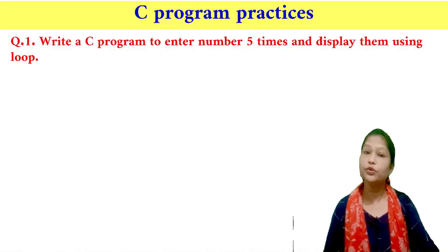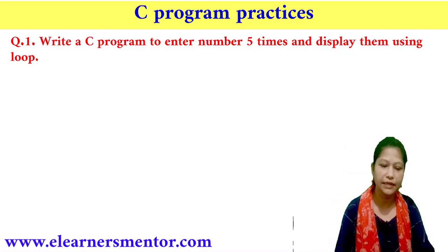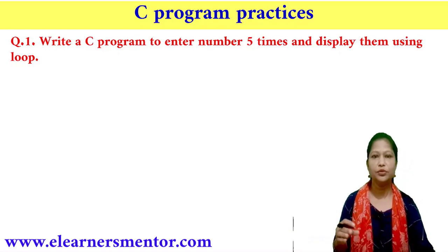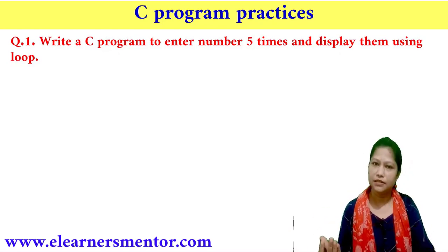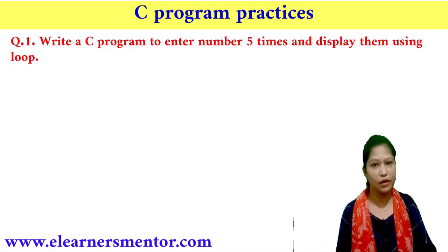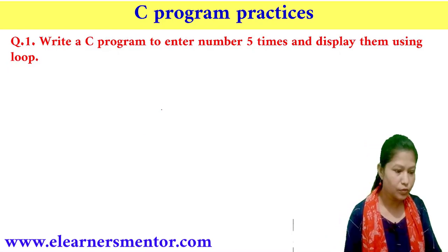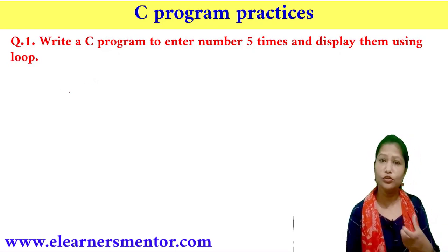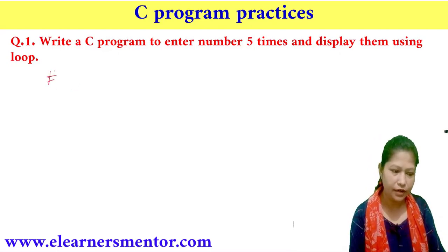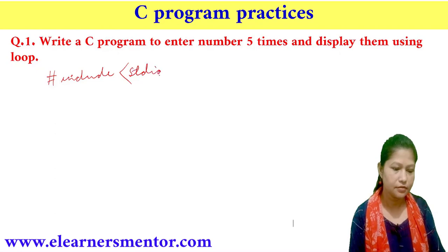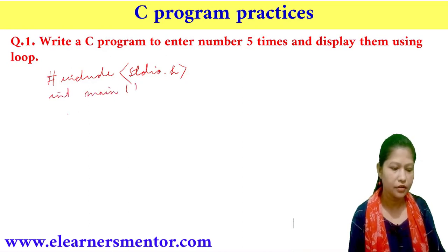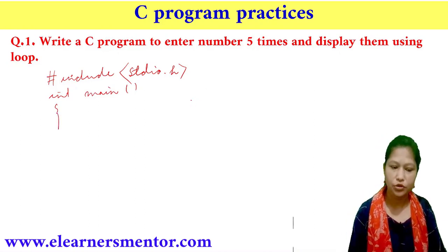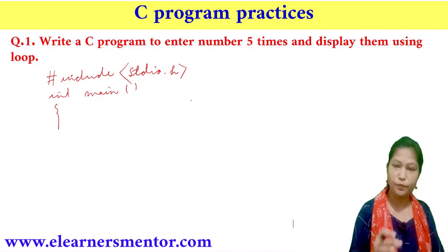The first program: enter a number 5 times and display them using a loop. We will use a while loop and a for loop. First, we need the header file — hash include stdio.h — and then the int main function.